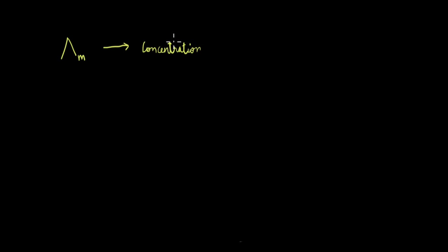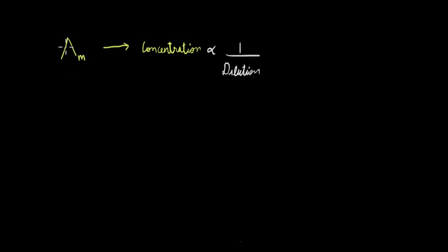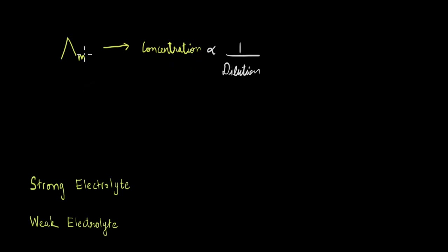When we talk of concentration, we know that decreasing the concentration is the same as increasing the dilution. When we think of molar conductivity, you can think of it as basically the conductivity of one mole of an electrolyte. How molar conductivity varies with concentration or dilution depends on the type of the electrolyte as well. An electrolyte can be a strong electrolyte or a weak electrolyte depending on how they dissociate.